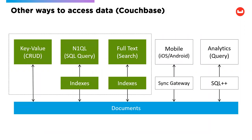Now let's talk about other ways to access data, as most NoSQL databases will have at least one way besides key-value. In Couchbase, key-value goes directly to the documents with no overhead. Couchbase also has N1QL, which is a full SQL implementation — my favorite thing about Couchbase. It usually has to go through indexes and a query parser, so there's some overhead. Full text search also goes through indexes. Couchbase also has mobile and analytics capabilities — for example, the Cincinnati Reds and Domino's Pizza are both using Couchbase analytics.